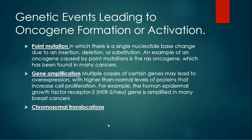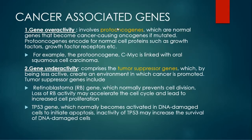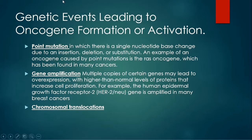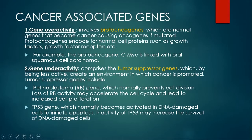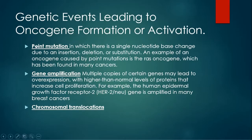The genetic events that lead to oncogene formation or activation include: first, point mutation — a single nucleotide base change due to an insertion, deletion, or substitution. An example of an oncogene caused by point mutation is the RAS oncogene, which has been found in many cancers.